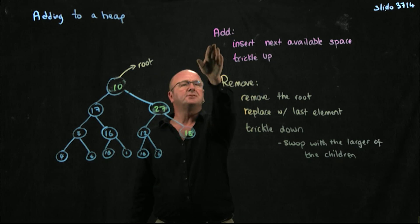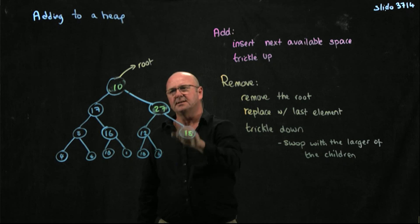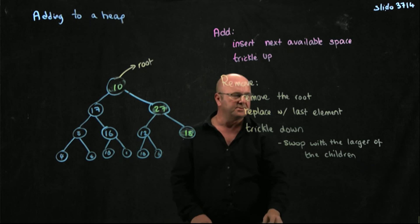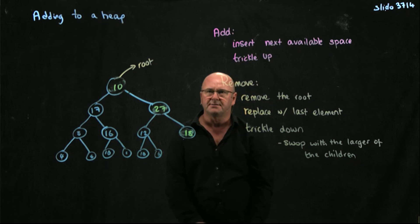So to add something to the tree, you put it in the next available space. To remove something from the heap, we always take away the root, and then we trickle down until it gets to where it should reside.